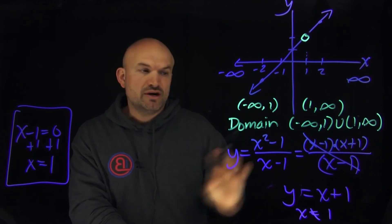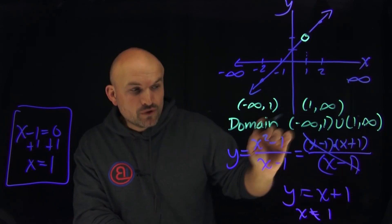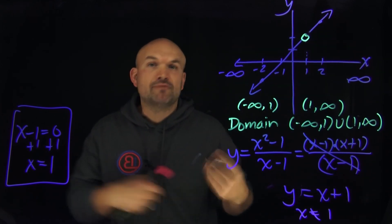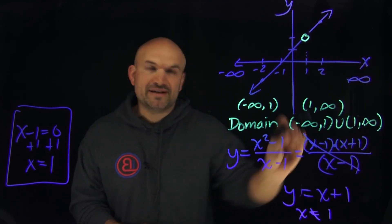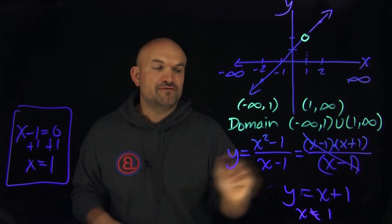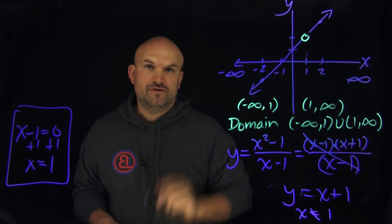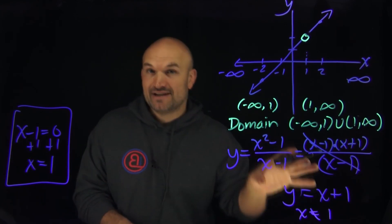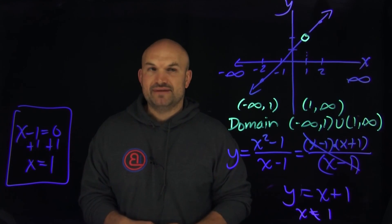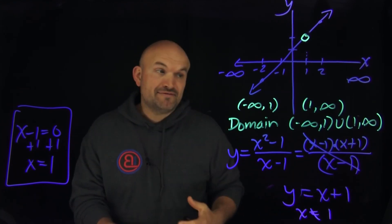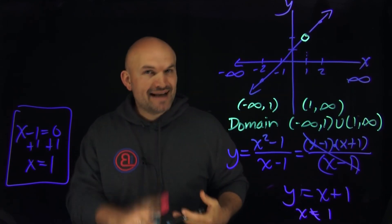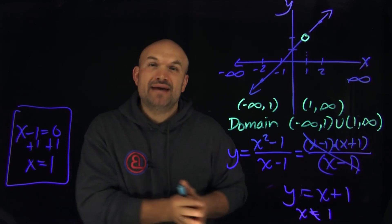When looking at this algebraically, you always want to simplify to divide things out. If you have a factor that gets divided out, that produces a hole in your graph — what we call a removable discontinuity. It doesn't matter if it gets simplified out or not; you still want to take the original function and set the denominator equal to zero to find the values that are not defined. Sometimes we're going to have things that do not divide out, and we're going to have discontinuities that are not holes — they're going to look like asymptotes.